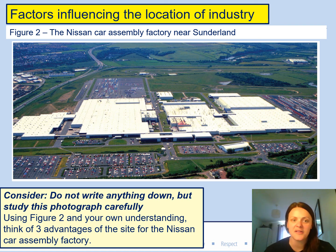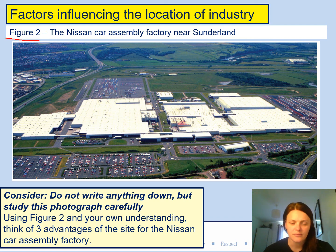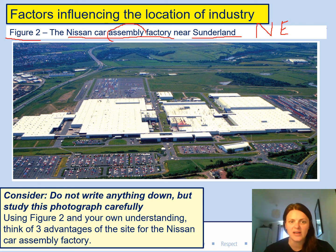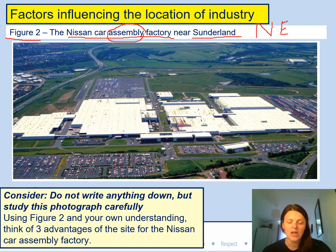Now we're going to look at what factors influence the location of industry. We're going to look at figure two — the Nissan car assembly factory near Sunderland, in the northeast of England, up near Newcastle. A car assembly factory is where they actually put the cars together. Just have a look at this picture.